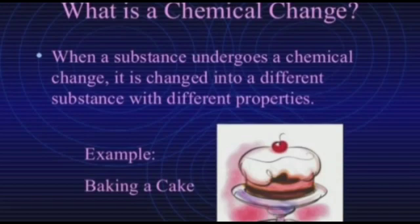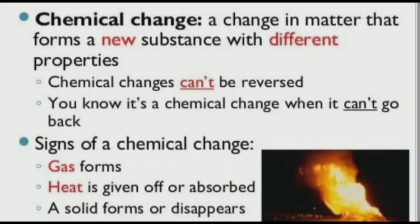Chemical changes: the changes in which the properties of a substance change and form an entirely new substance are called chemical changes — a change in matter that forms a new substance with different properties. Chemical changes cannot be reversed. Signs of a chemical change: gas is formed, heat is given off or absorbed, a solid forms or disappears.